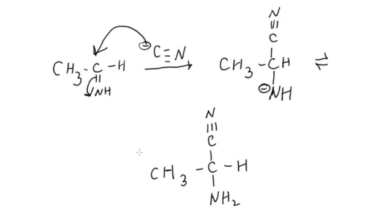Comparing this intermediate to the product we are trying to get, we already have most of the building blocks in place: the amino group right here, the carbon and the side chain right here, and the carbon that will eventually become a carboxyl group. All we have to do now is hydrolyze this nitrile to convert it into a carboxyl group and we have our product. Next, we will see the hydrolysis of the nitrile group.